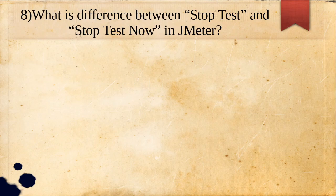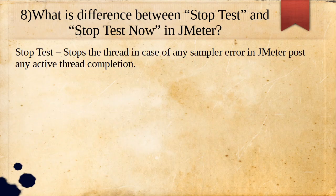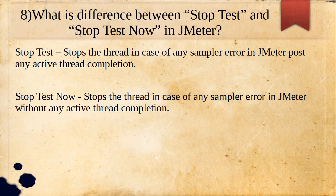Eighth question: what is the difference between Stop Test and Stop Test Now in JMeter? These are radio buttons found in the thread group, activated when a sampler error occurs. In the case of Stop Test, JMeter will wait for any active thread to complete before stopping. In the case of Stop Test Now, it will immediately stop without waiting for any active thread to complete.